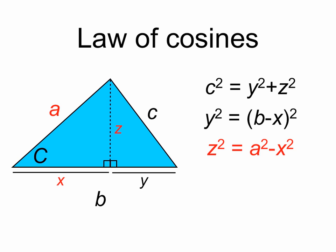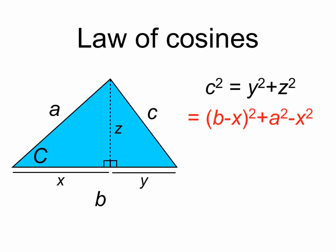The reason we did these last two steps is we can now substitute these expressions for y² and z² into our original equation. So we can now write c² = (b - x)² + a² - x². And now we can expand the (b - x)² term. So we have b² + x² - 2bx + a² - x².